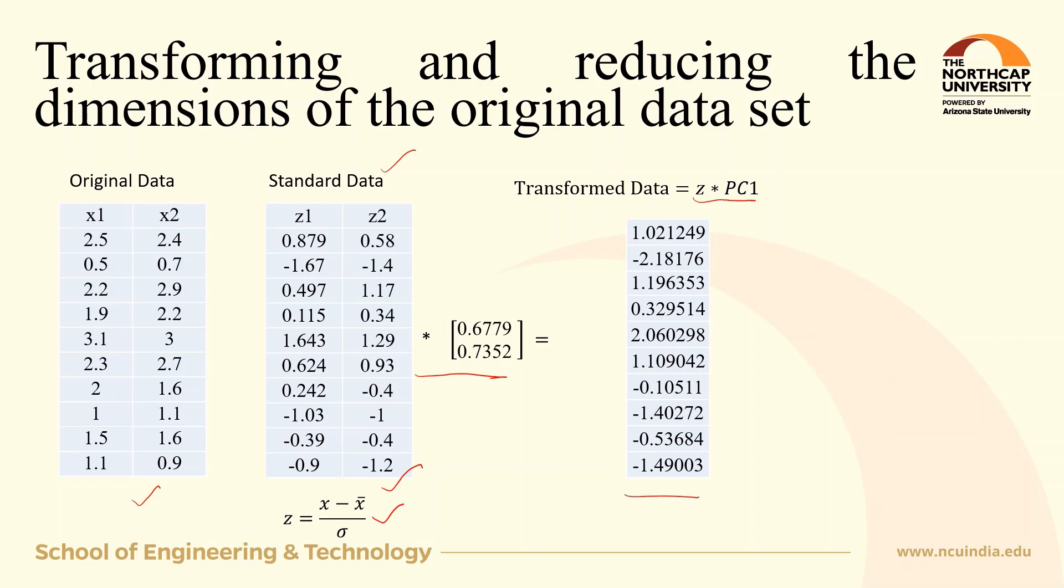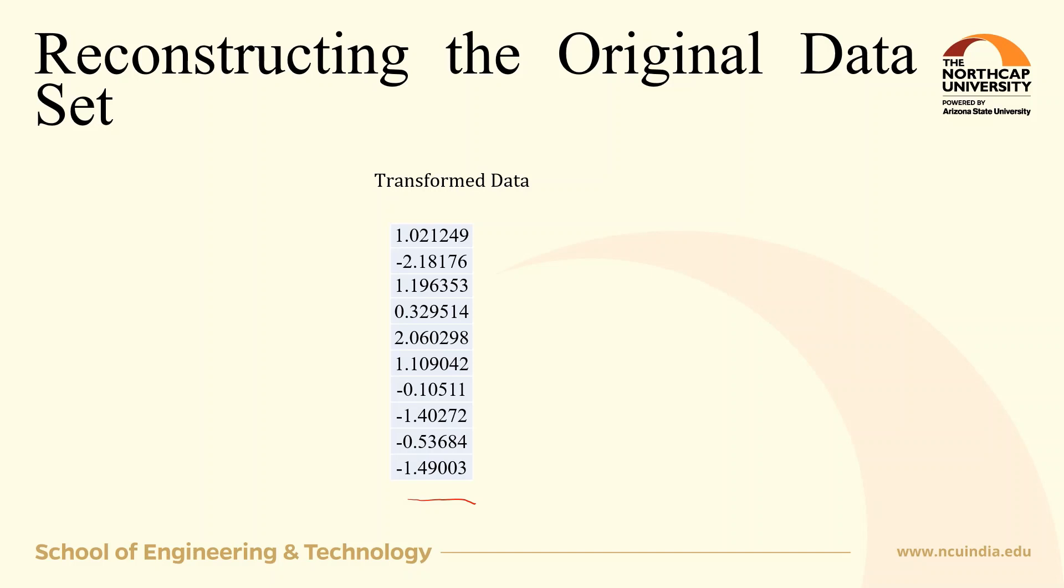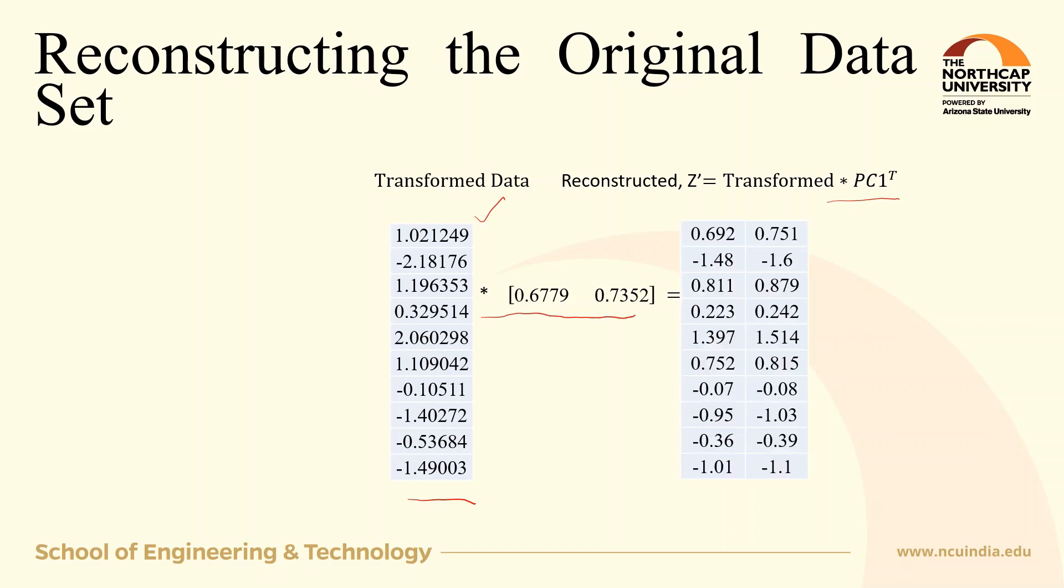This is how we get the transformed data. To reconstruct the original data, multiply this transformed one-dimensional data with the transpose of the first principal component. Using matrix multiplication, you will get back the two-dimensional data again in standardized form.